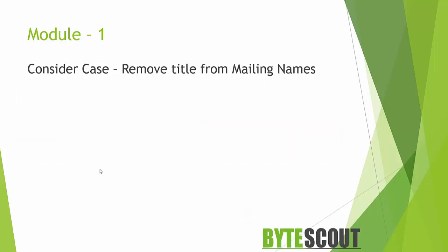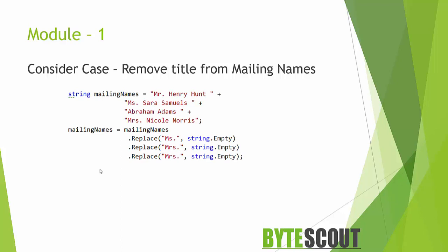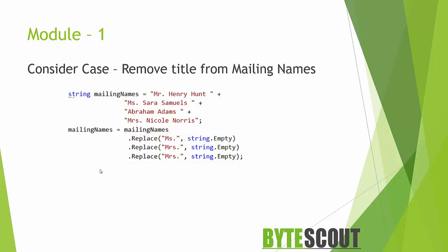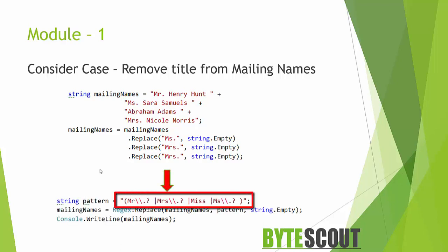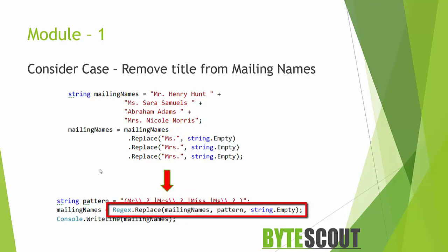Consider this situation: assume that I have a mailing list that contains names sometimes including a title like Mr., Mrs., or Miss along with the first name and last name. Now I want to replace or remove that title with an empty string. In normal case I need to use the replace function 3 times to replace each occurrence of the title. But if I use regular expressions, this code now looks much simpler — the regex pattern matches any occurrence of Mr., Mrs., Miss, etc., and the call to regex replace method replaces the matched string with an empty string, removing it from the original string.